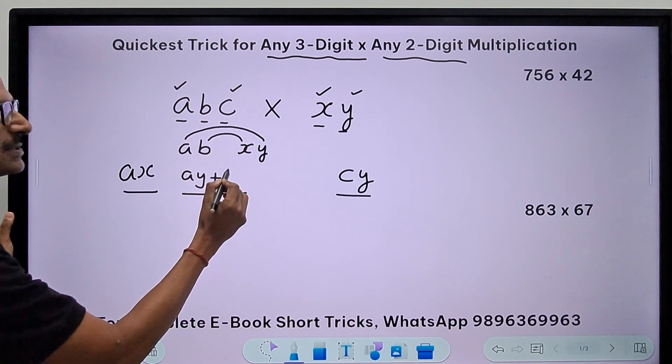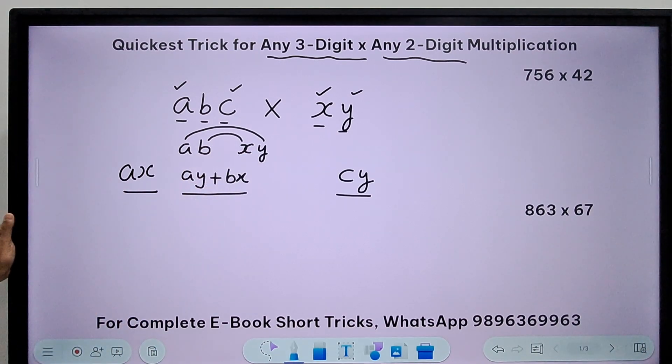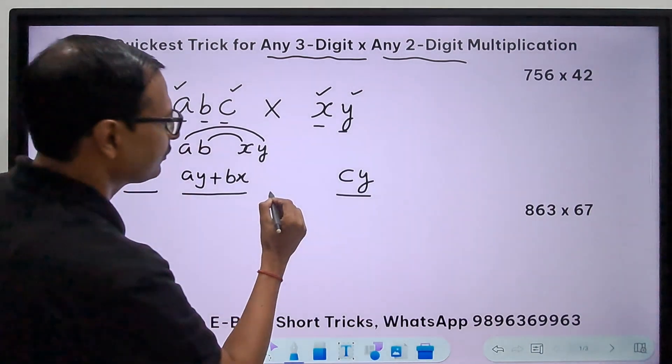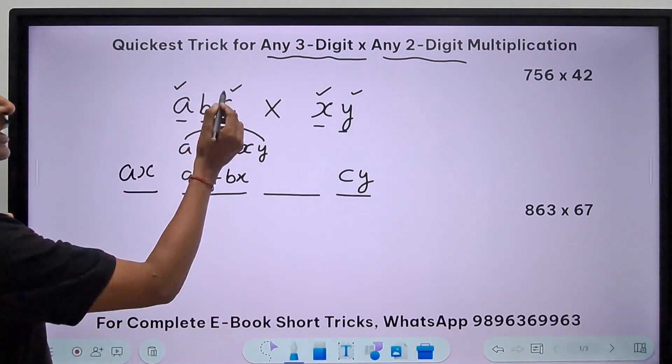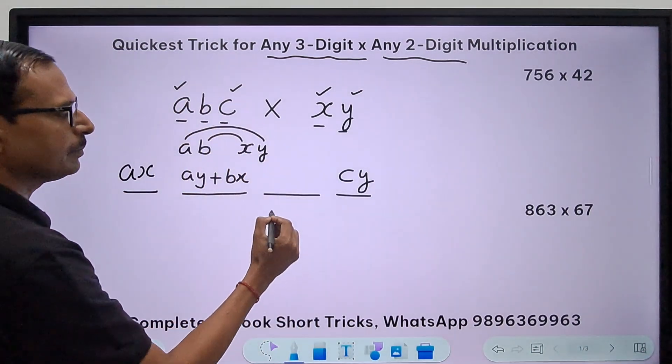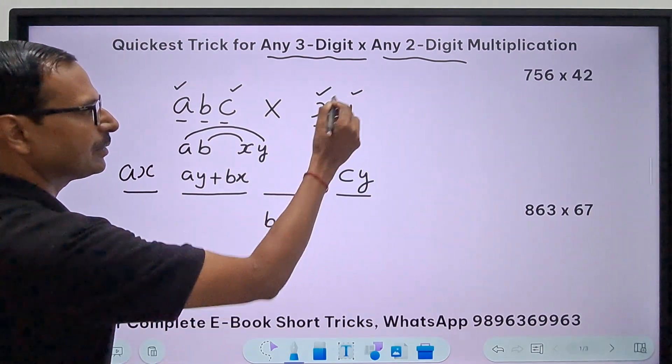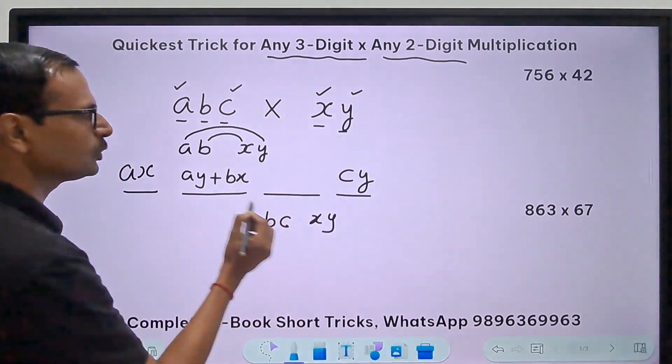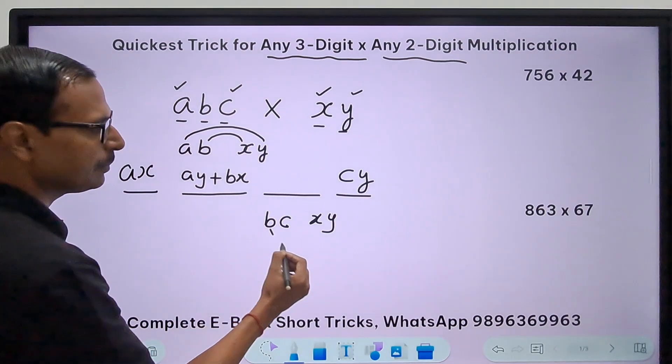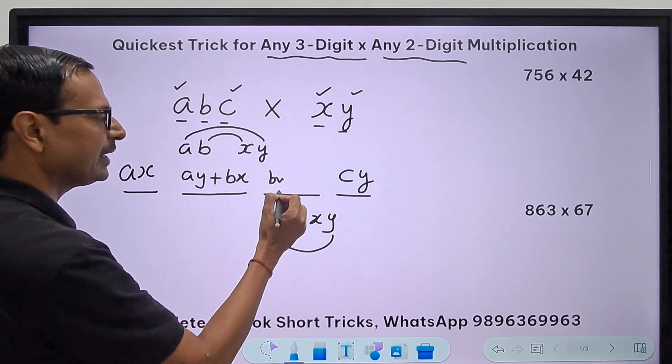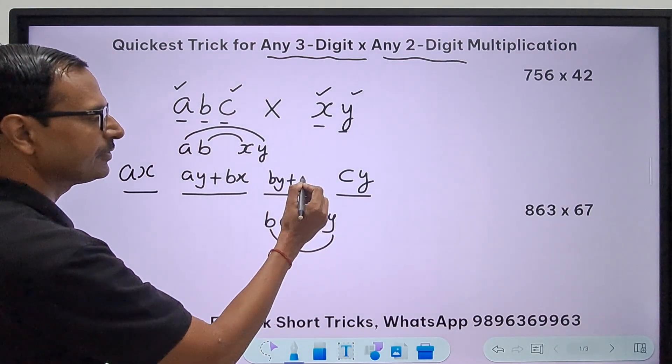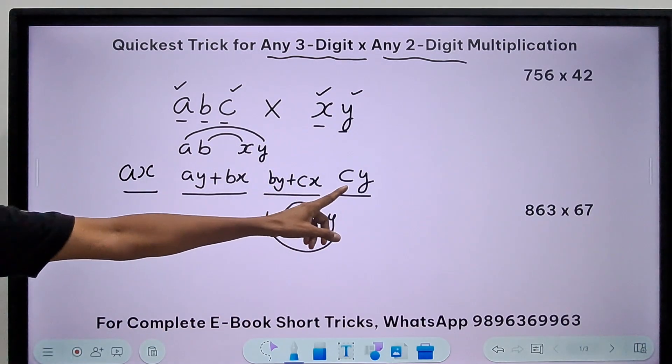Likewise, for the third number we will take the last two digits here, bc, and the number xy, and we will do the same thing—by and add it to the product of cx. Now these are the four numbers which you need to get very quickly.